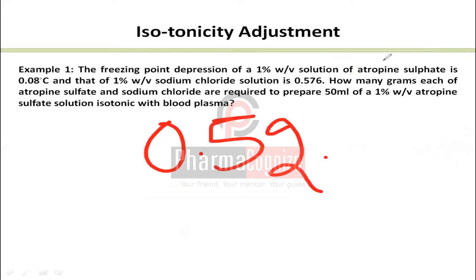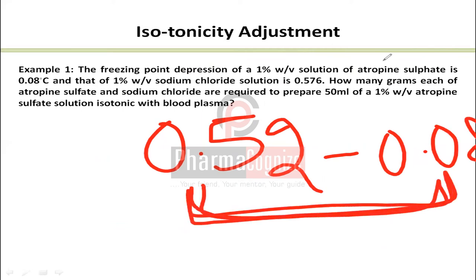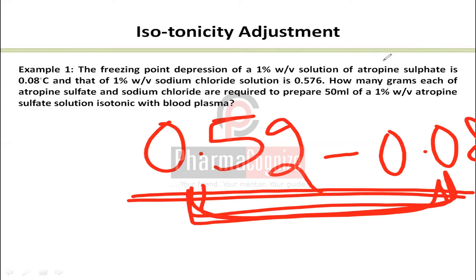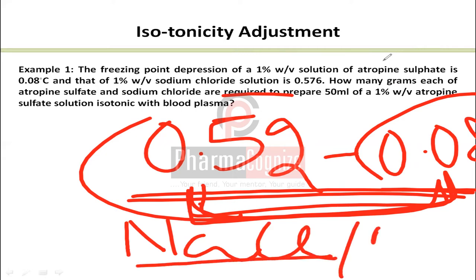Since the freezing point depression is not yet 0.52, I need to adjust the difference. I have to make up the remaining depression. To adjust this difference, we typically use sodium chloride, or alternatively boric acid — but sodium chloride is most commonly used. Let us now look at the formula used for this calculation.